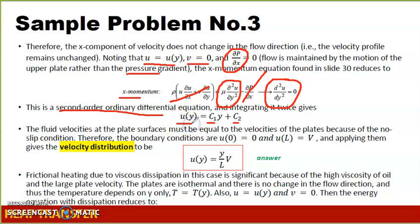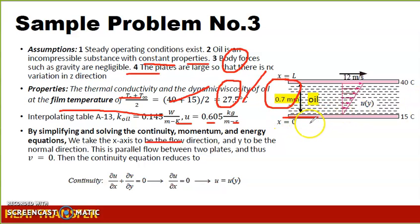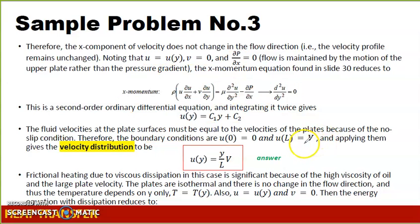Our velocity in the y-direction is a function of the form u = C1·y + C2. To solve for C1 and C2, we apply our boundary conditions. At y = 0 the plate is stationary so velocity equals 0, and at y = L velocity equals 12 m/s. Applying these values gives us the velocity distribution: u = (y/L) · V, where V is 12 m/s.